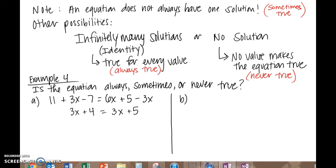So for part A, we have the equation 11 plus 3x minus 7 equals 6x plus 5 minus 3x. When we combine like terms, we get 3x plus 4 equals 3x plus 5. And then we subtract the 3x from both sides, and we get 4 equals 5, which is not true. That means that this is never true, and there are no solutions.